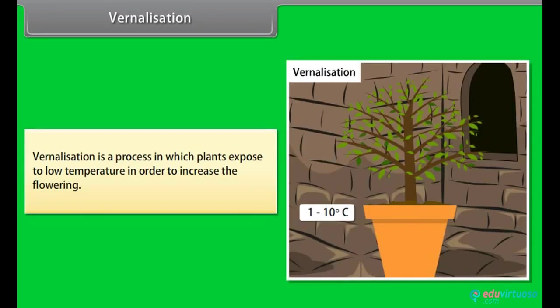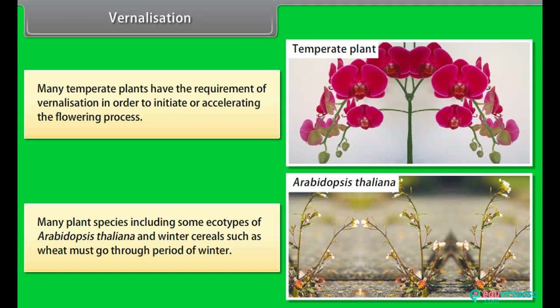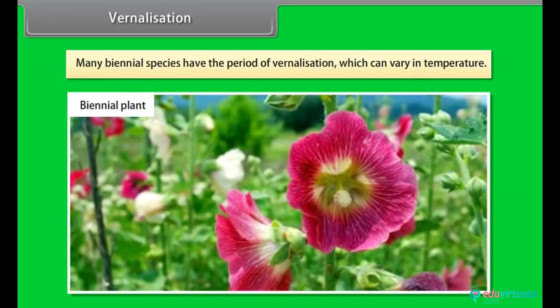Vernalization. Vernalization is a process in which plants are exposed to low temperature in order to increase the flowering. Many temperate plants have the requirement of vernalization in order to initiate or accelerate the flowering process. Many plant species including some ecotypes of Arabidopsis thaliana and winter cereals such as wheat must go through period of winter. Many biennial species have the period of vernalization which can vary in temperature.